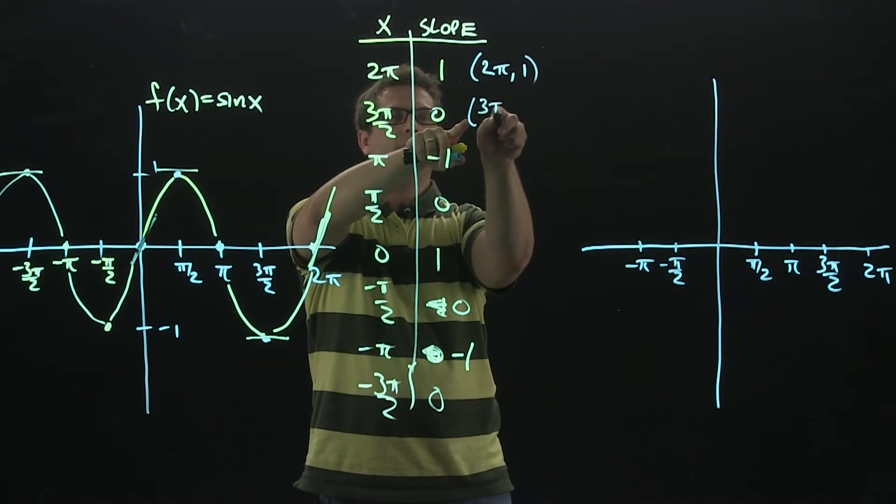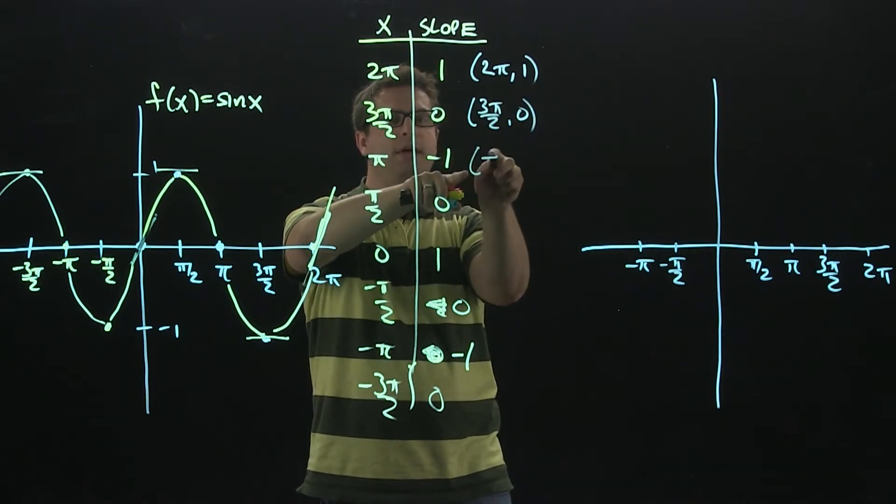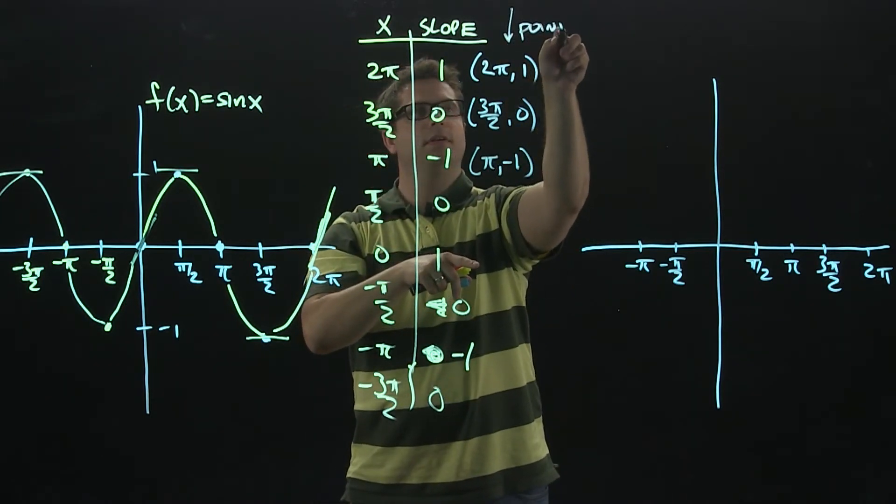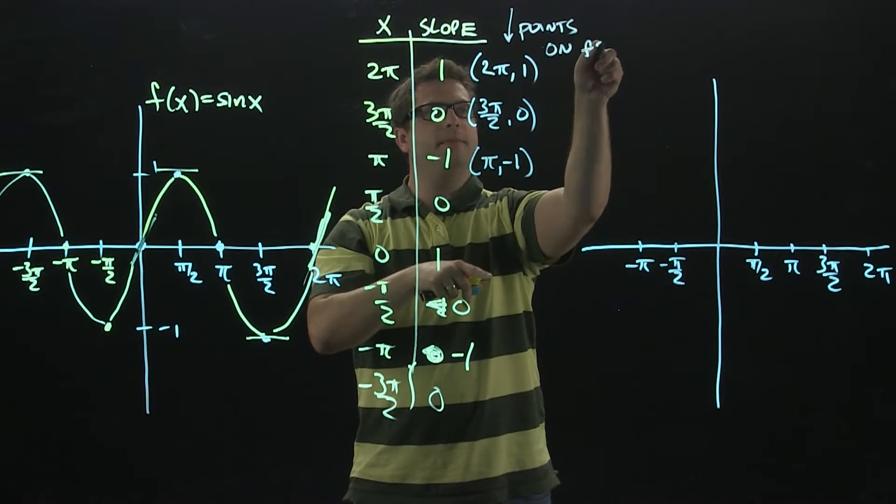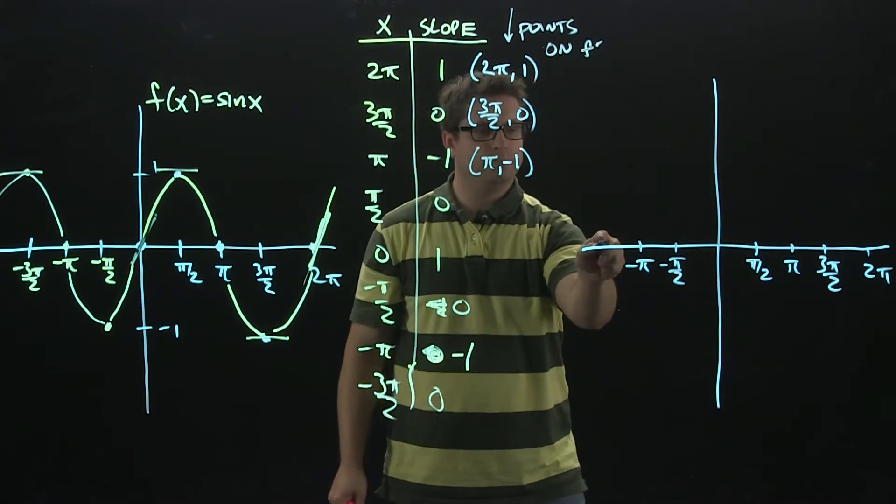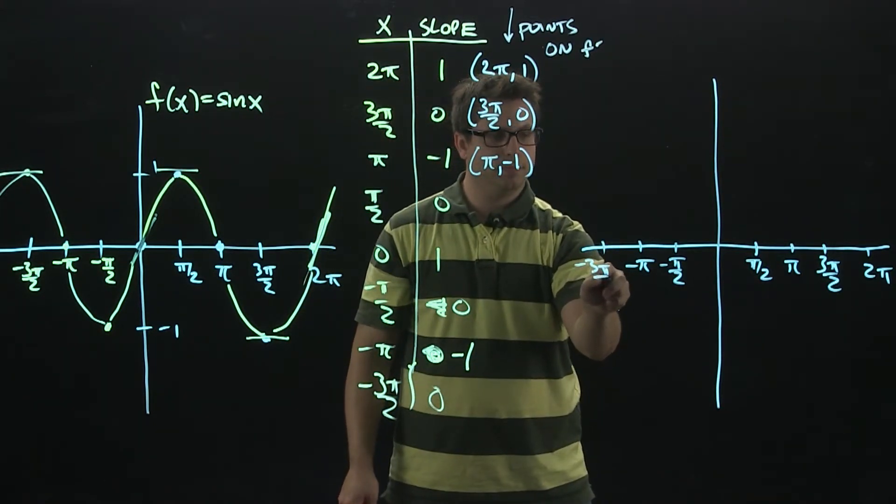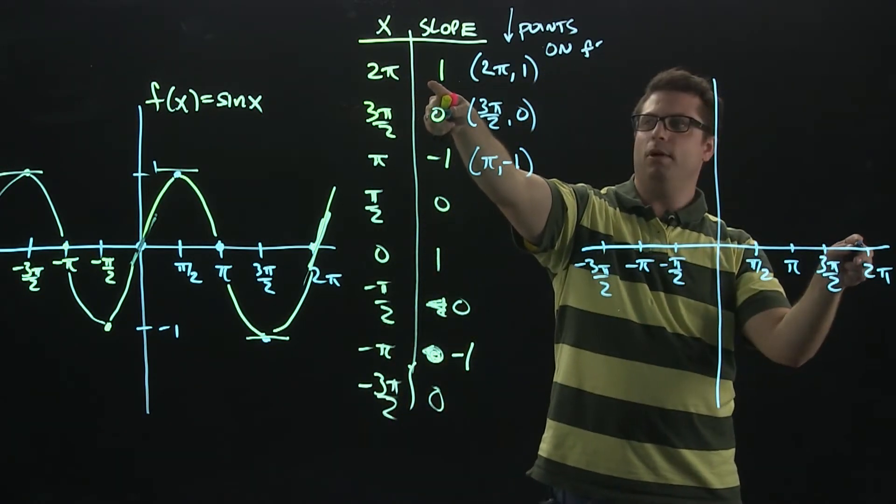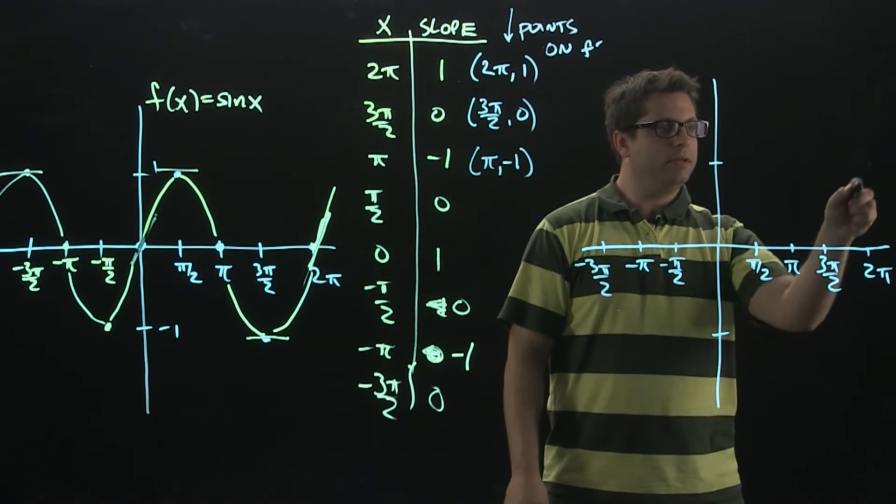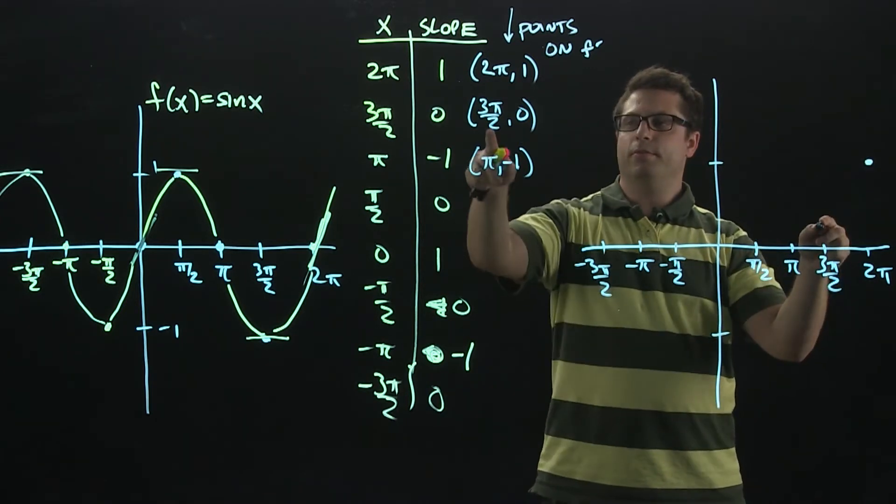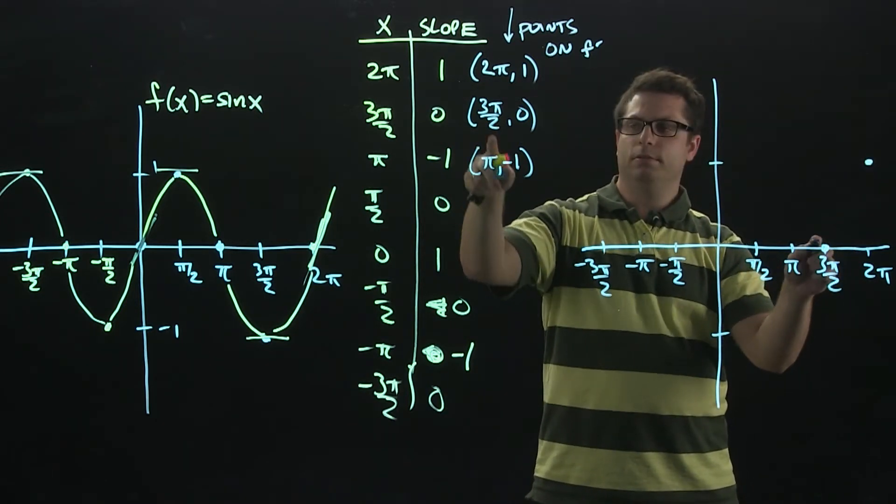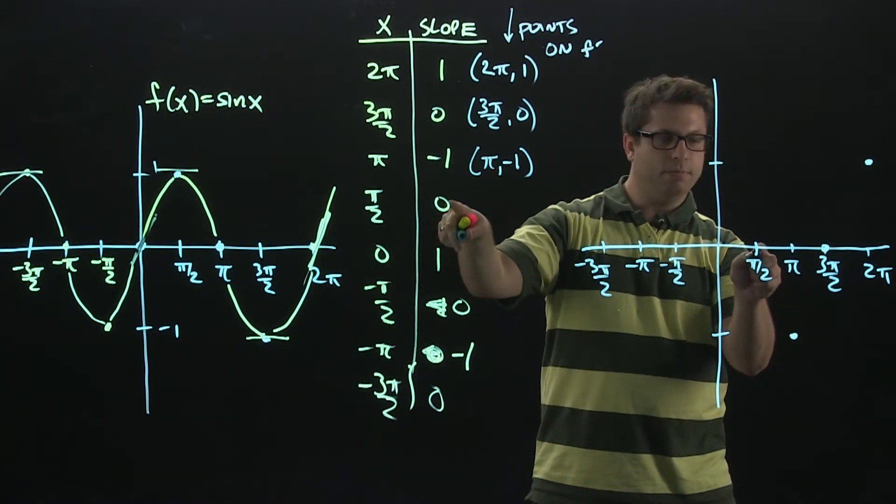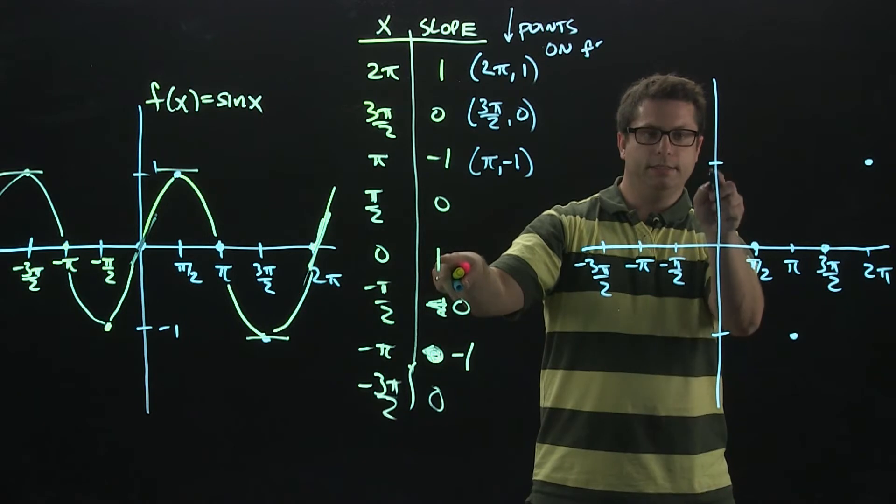We're going to get 3 pi over 2, comma, 0. Pi, comma, negative 1. Again, these are all the points on F prime. So let's go through this. 2 pi, comma, 1. Here, 3 pi over 2, comma, 0. Pi is negative 1. Then that will be 0. And at 0, we get 1.